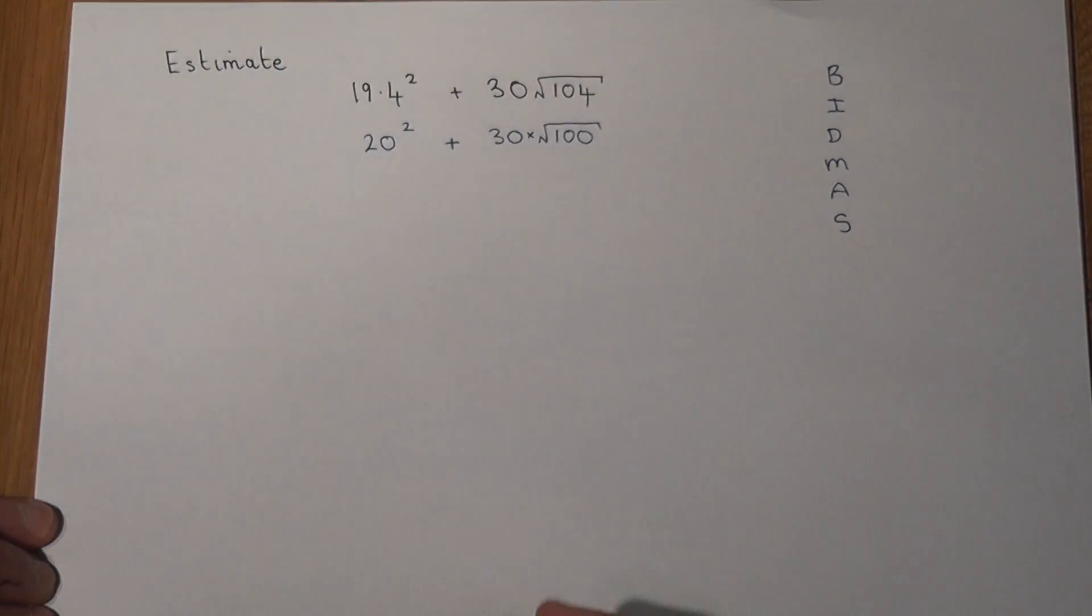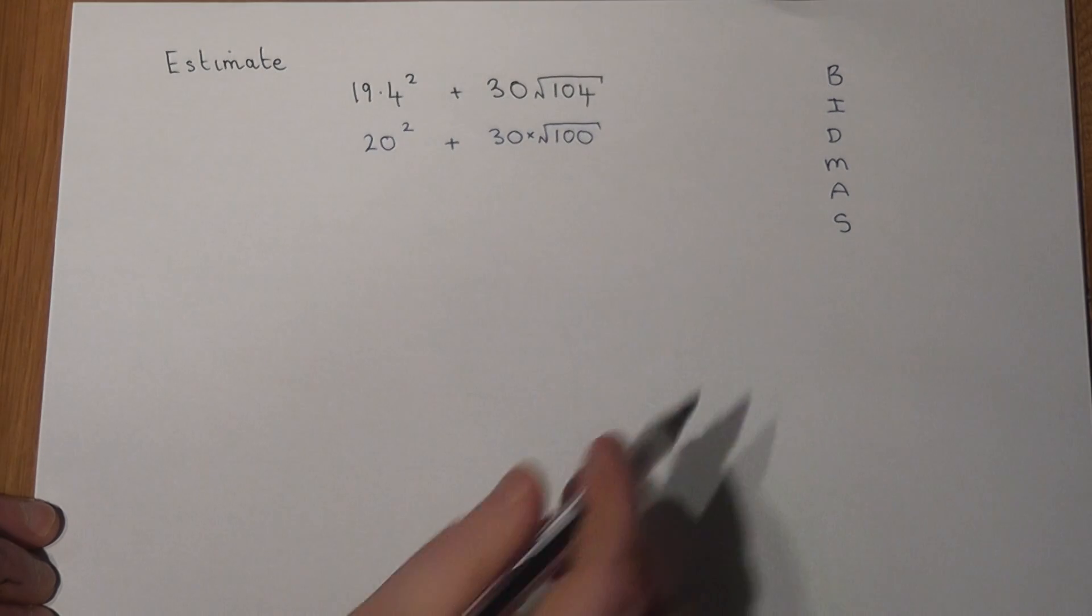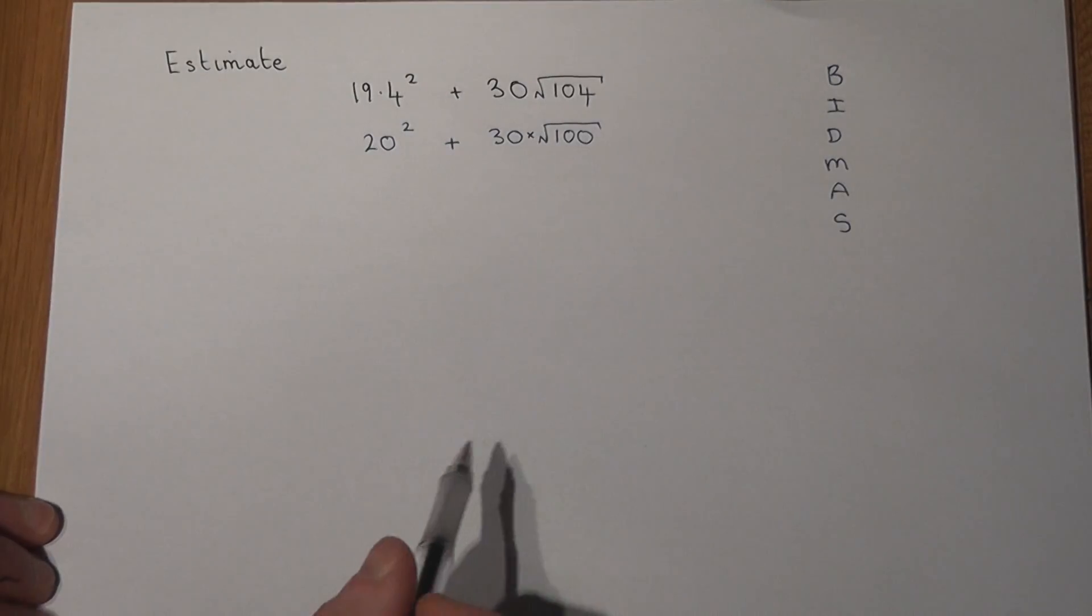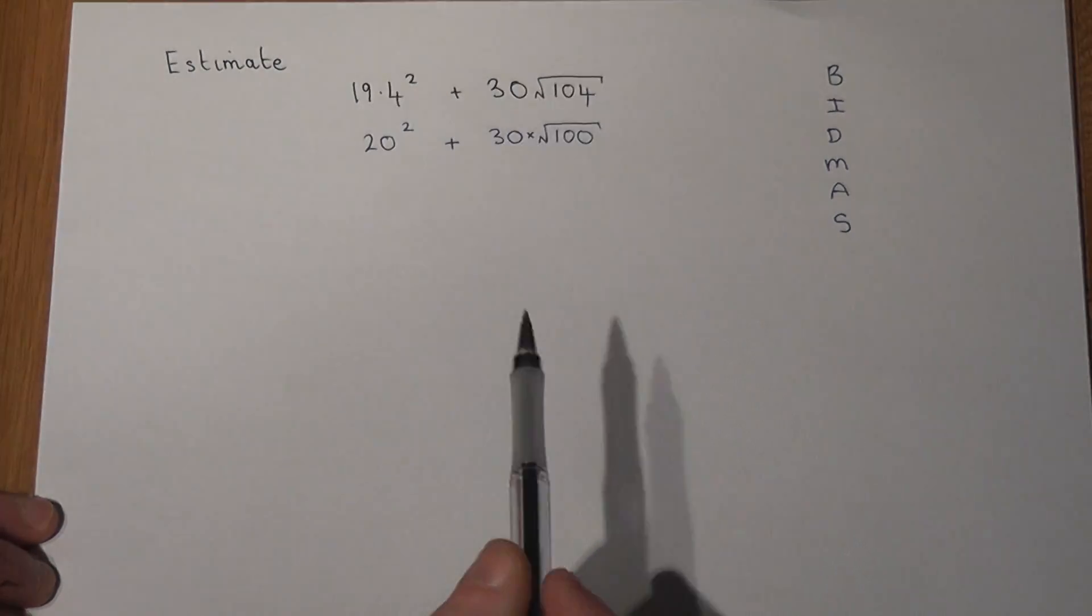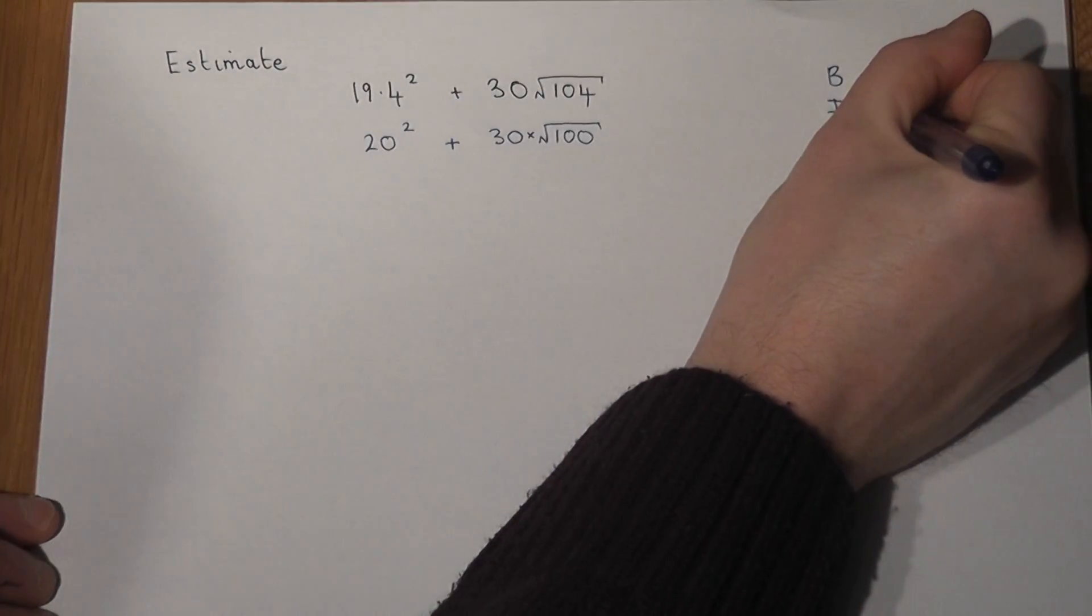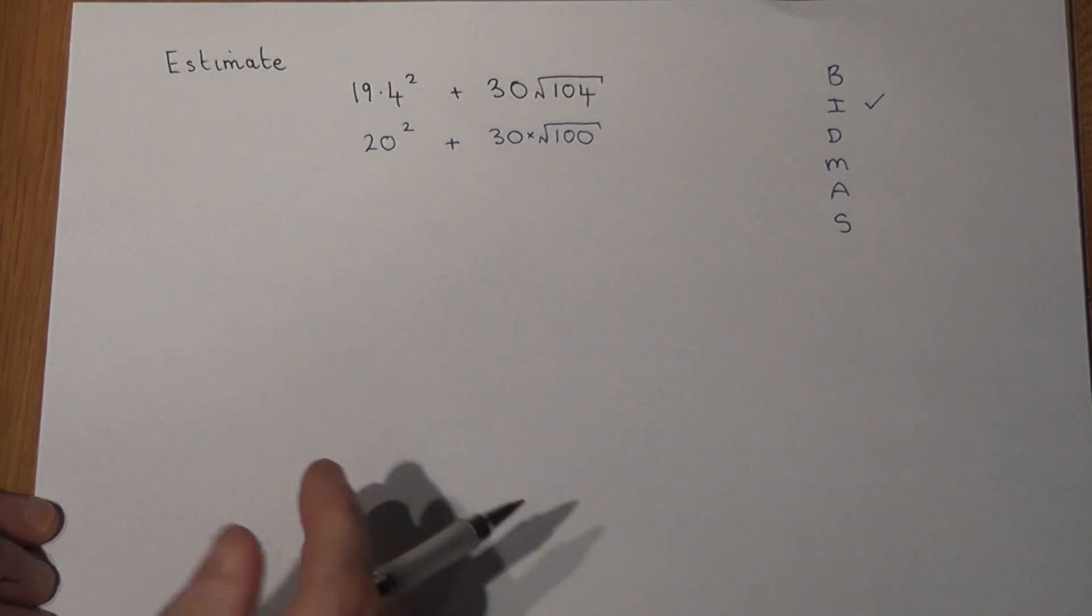Now we actually have two powers here, we've got a square and a square root, so we would do those first because there are no brackets in this question particularly.